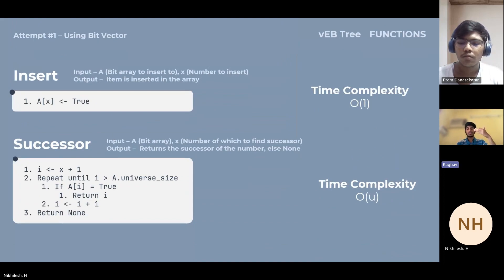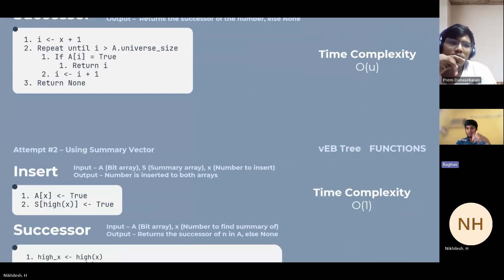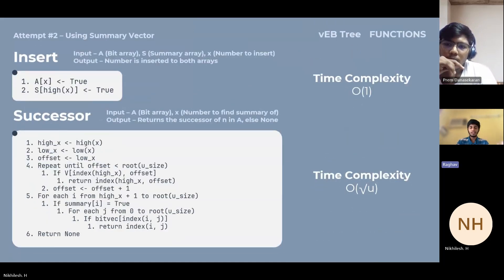We have a total of four attempts where each attempt is an optimization of the previous one. The first attempt is by using a bit vector. For insertion, you just directly insert it into the vEB tree and replace that with one. For successor, you iterate through each element until you find a successor. The time complexity for this is O(1) for insertion and O(u) for successor.